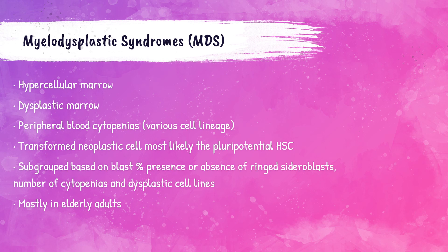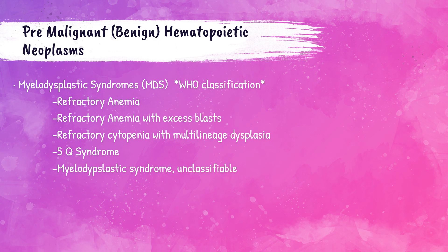Myelodysplastic syndromes (MDS) are a group of benign hematopoietic disorders characterized by ineffective hematopoiesis. These disorders involve bone marrow failure, peripheral cytopenia (reduction in blood cell numbers), and a risk of developing leukemia. They are subgrouped based on the percentage of blasts, presence or absence of ringed sideroblasts, and the number of cytopenias and dysplastic cell lines. WHO classifications include refractory anemia, refractory anemia with excess blasts, refractory cytopenia with multi-lineage dysplasia, 5q syndrome, and unclassifiable MDS.